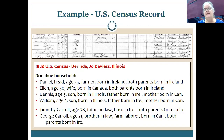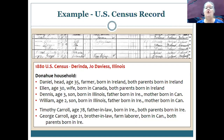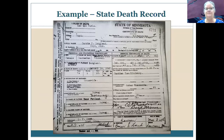Even if family stayed on the same farm year after year, it's still valuable to search them in every census, every ten years — there could be clues about what they're doing for a living or who's living with them that you'd overlook otherwise. As family historians, we're almost like private investigators, using each document for clues.